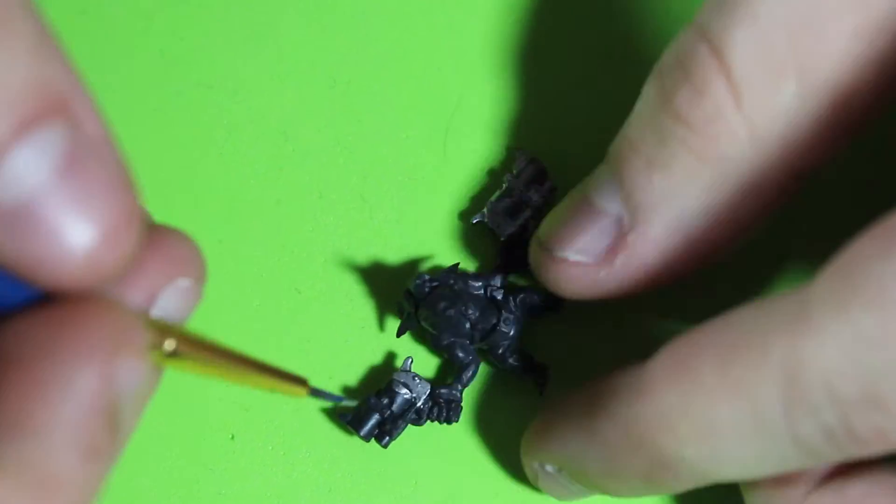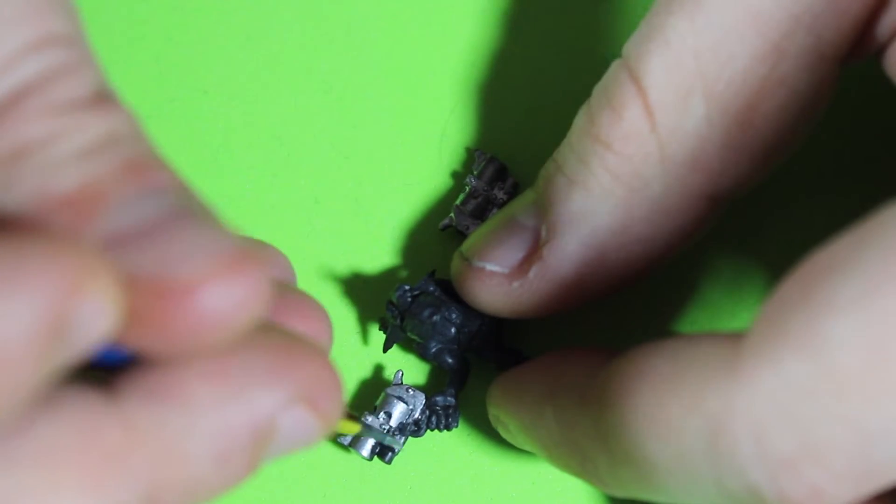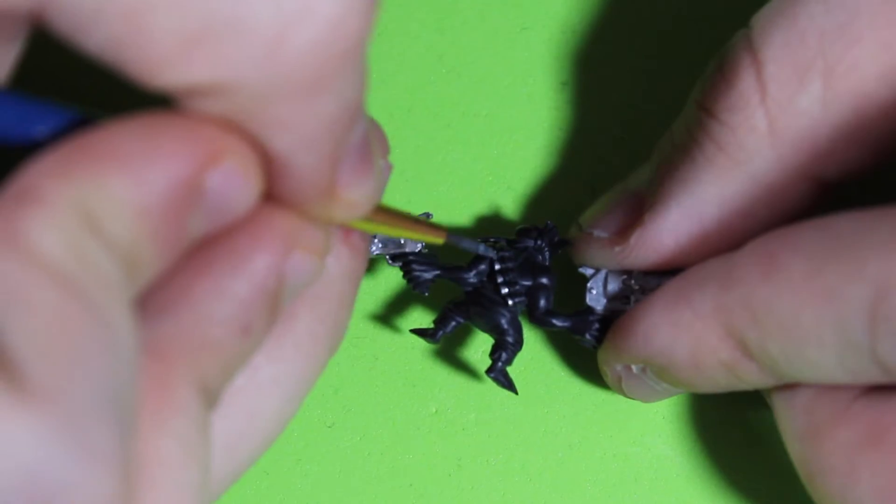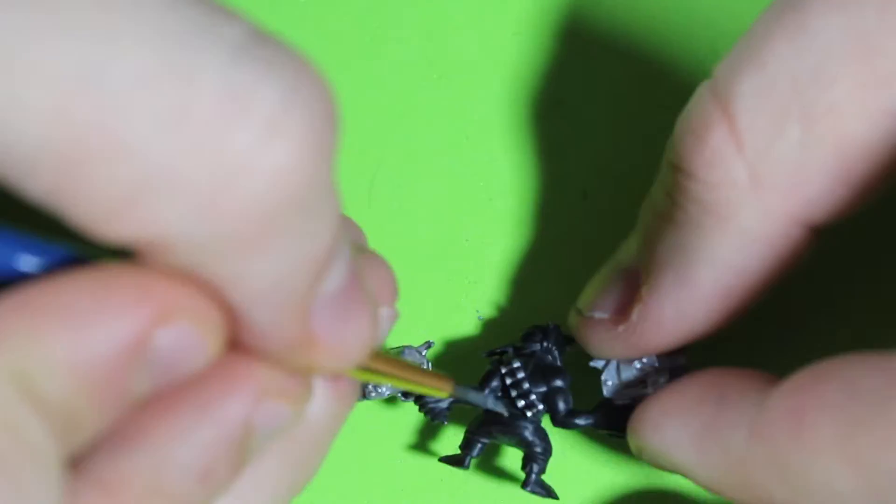The first thing I did was I took a metallic color and painted the gun, the belt buckle, and the bullets that this particular Gretchen has metallic. One cool thing about Gretchens is that they all have different poses.